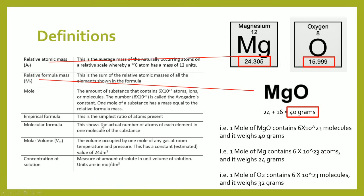There are a couple of definitions you need to get your head around. We've got the relative atomic mass, represented as Ar. This is the average mass of the naturally occurring atoms on a relative scale whereby carbon has a mass of 12 units. What you do need to know is that if you look at the periodic table, the mass number of the atom of that element is basically the relative atomic mass — that is key.